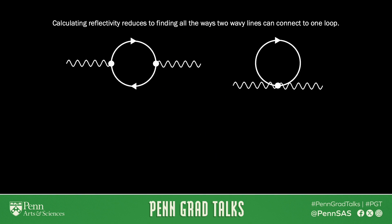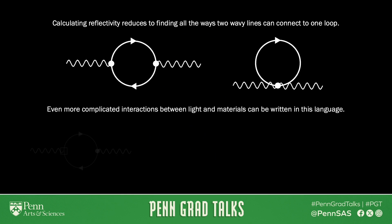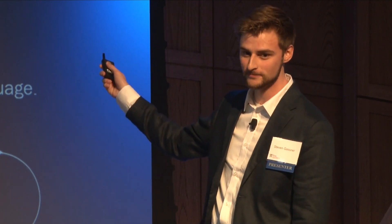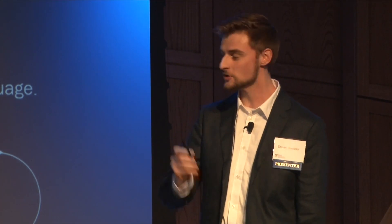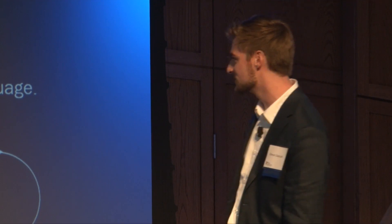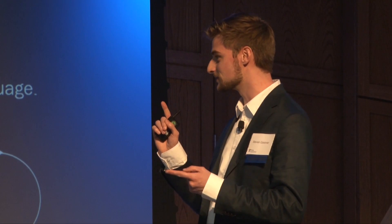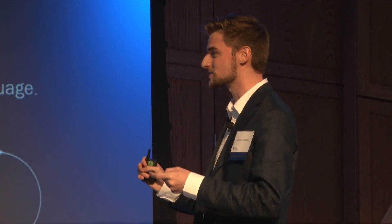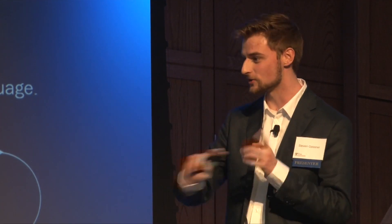Questions like what is the reflectivity of a material boil down to a little game where you try to figure out all the different ways that two wiggly lines can attach to one loop. I play the same exact game in my research for more complicated interactions between light and materials. I start by writing down all the diagrams that satisfy a certain set of conditions, and the math just comes out from there. It not only makes calculations easier, but it also makes extremely clear what is happening with the light and the electrons underneath all the math.